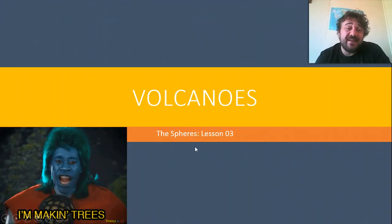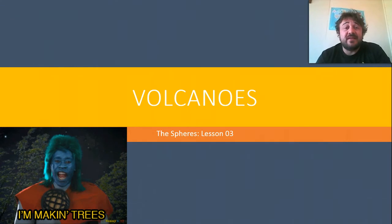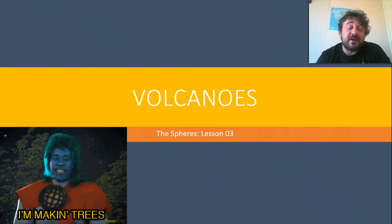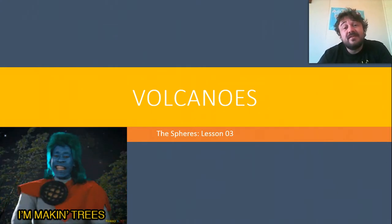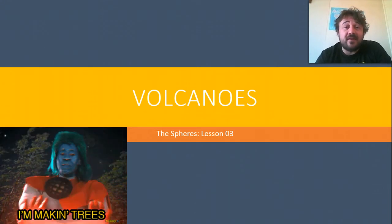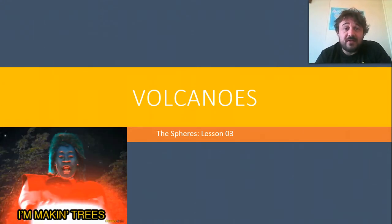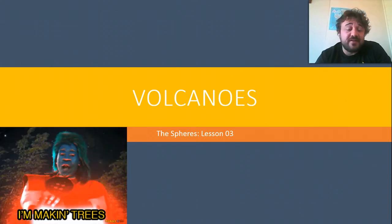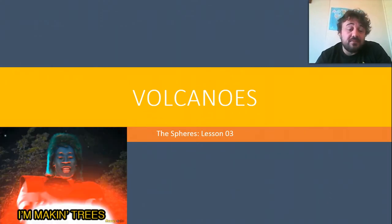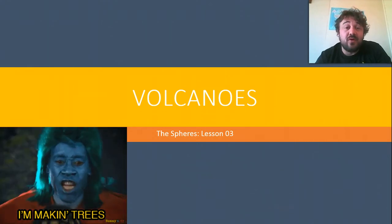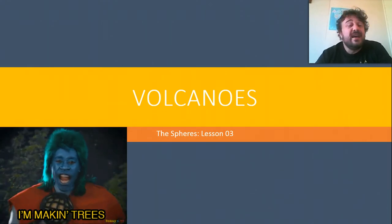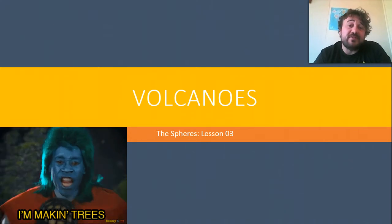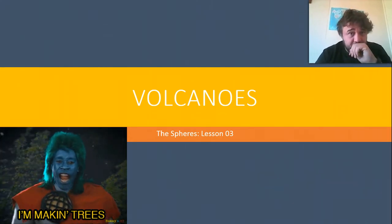Today we're going to look at volcanoes. We're looking at how different scientists from different fields interact. This is one where we can look specifically at the effects on the rocky area - that's geologists. Local environments - that's ecologists, which are biologists. The change in chemical composition of waters and the atmosphere - that's chemists. And the impact on the atmosphere in general - that's meteorologists and climatologists. There's a whole range of scientists which have to work together to deal with volcanoes.